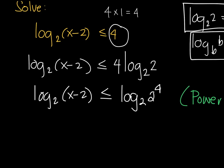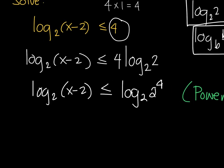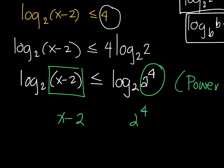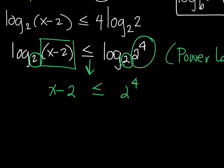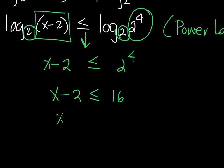Now we have a log on one side and a log on the other side, so we can use the usual approach for logarithmic inequalities. Since the base is a positive number greater than 1, the inequality is preserved. So we get x minus 2 less than or equal to 2 raised to the 4th, which is 16. Solving this simple inequality: x is less than or equal to 16 plus 2, so x is less than or equal to 18.